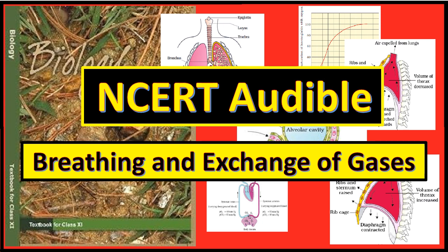Trachea is a straight tube extending up to the mid thoracic cavity which divides at the level of the 5th thoracic vertebrae into right and left primary bronchi. Each bronchus undergoes repeated division to form secondary and tertiary bronchi and bronchioles ending up in very thin terminal bronchioles. The trachea, primary, secondary and tertiary bronchi and initial bronchioles are supported by incomplete cartilaginous rings. Each terminal bronchiole gives rise to a number of very thin, irregularly walled, vascularized, bag-like structures called alveoli. The branching network of the bronchi, bronchioles and the alveoli comprise the lung.